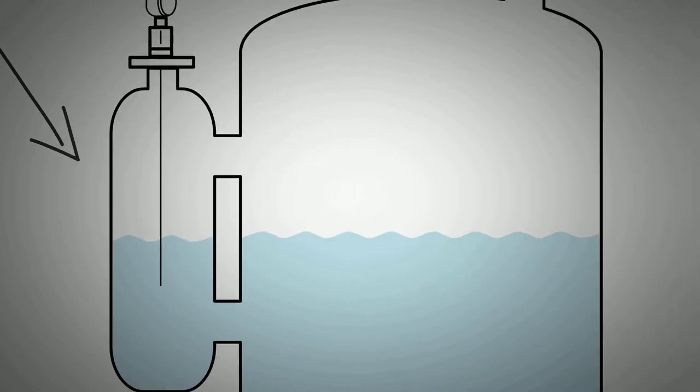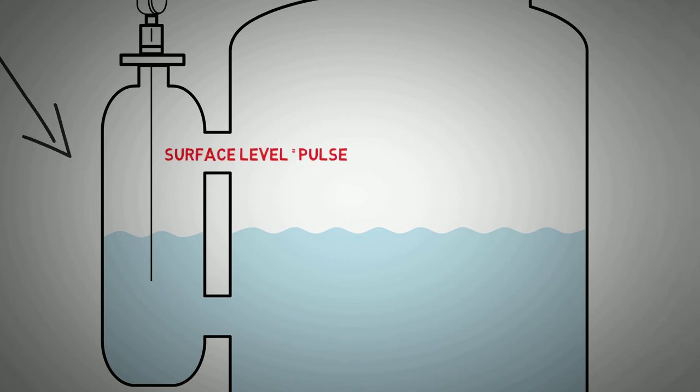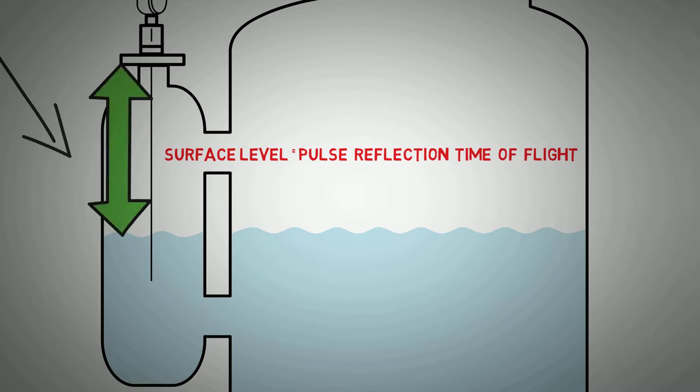The transmitter measures the time difference between the pulses being sent down the probe to being received and uses this to calculate the distance the media is from the probe and in turn can give a level measurement.